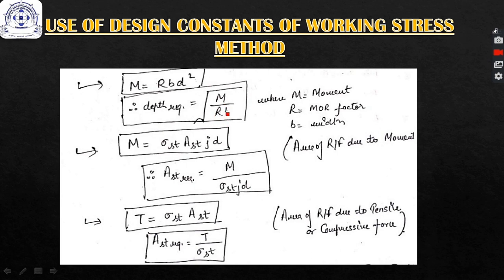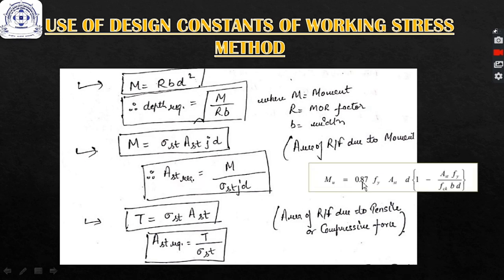In limit state method we also use the same formula d = √(M / (R·b)), but the value of R is different — for example, it was 0.138·fck for some cases. For working stress method, the reinforcement required due to moment is: Ast = M / (sigma_st × J × d). In limit state method, we solved a quadratic equation: M = 0.87·fy·Ast·d·(1 - Ast·fy / (b·d·fck)).